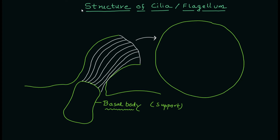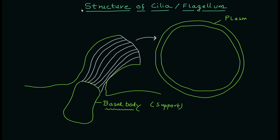Here we are discussing eukaryotic cilia and flagella. The structure of prokaryotic flagellum is quite different, and in the case of prokaryotes you don't have cilia.